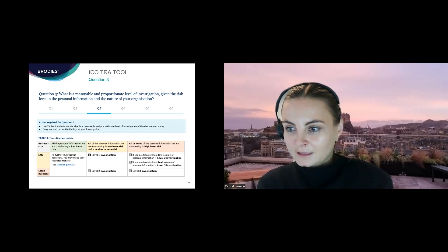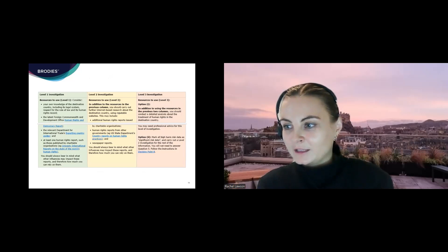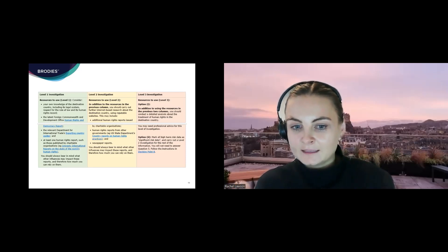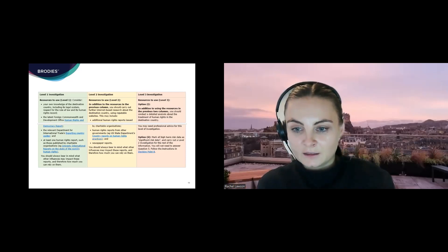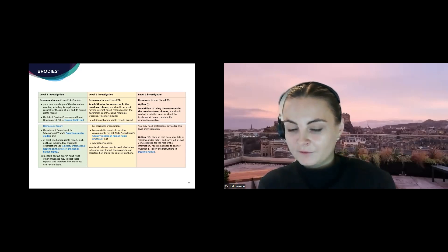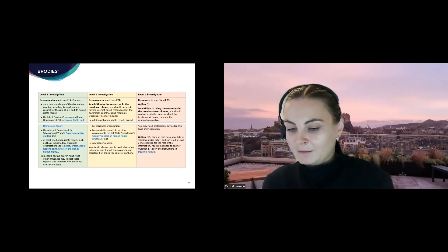The tool outlines the type of investigations you'd be expected to carry out based on the risk profile determined. Level one investigations look at what general protections are given to human rights in the destination country — for example, through FCO reports and anything published by Amnesty International. Level two and three investigations progress to more in-depth research on particular protections offered to the human rights at risk for your specific transfer, with the highest-risk transfers likely needing specialist input from advisors in the destination country.